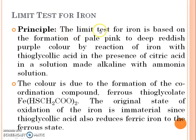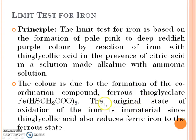The principle: The limit test for iron is based on the formation of a pale pink to deep reddish-purple color by reaction of iron with thioglycolic acid in the presence of citric acid, in a solution made alkaline with ammonia solution. The color is due to the formation of the coordination compound ferrous thioglycolate. The original oxidation state of iron is immaterial since thioglycolic acid also reduces ferric iron to the ferrous state.